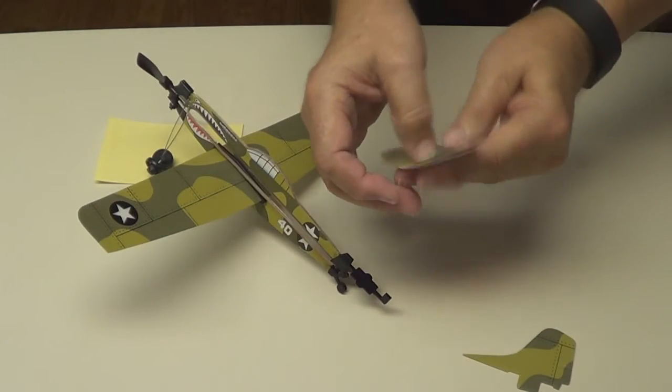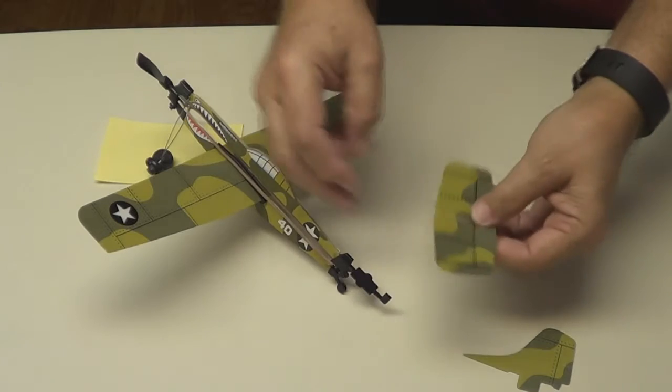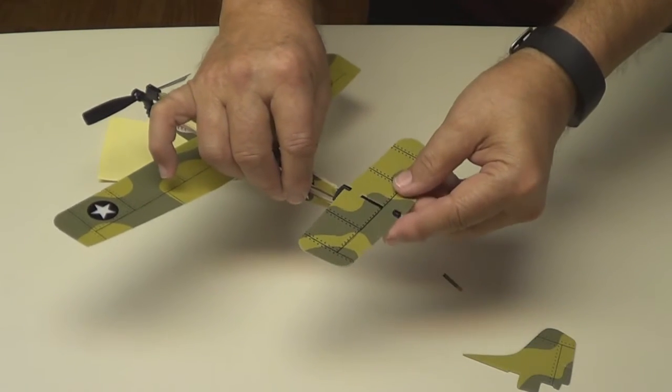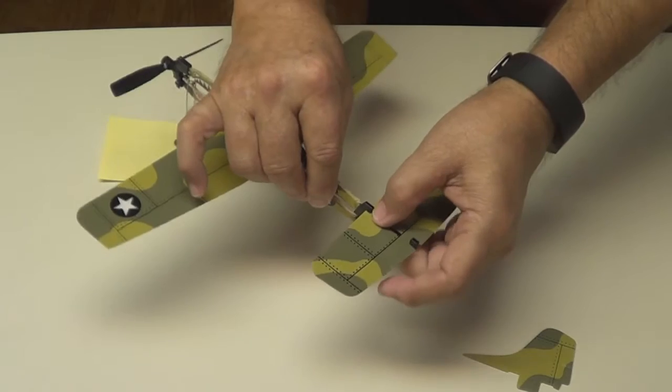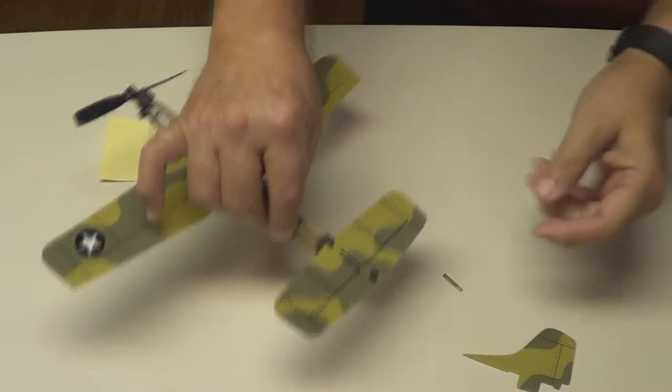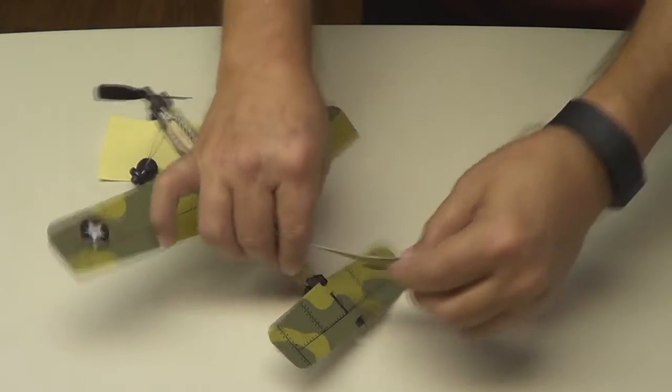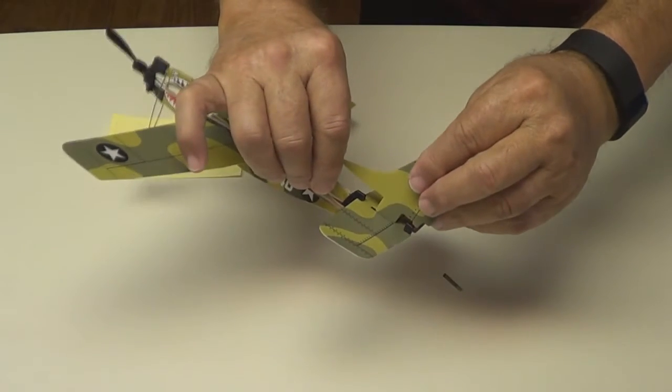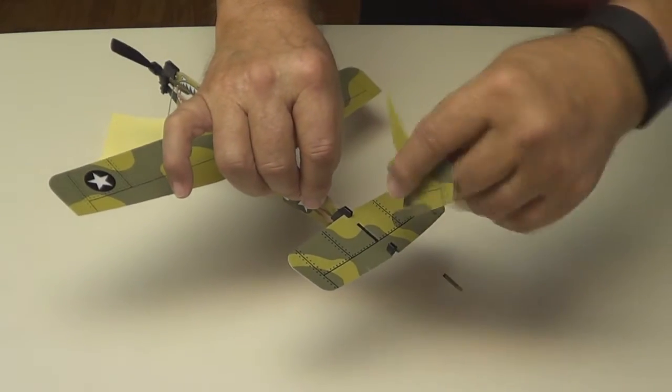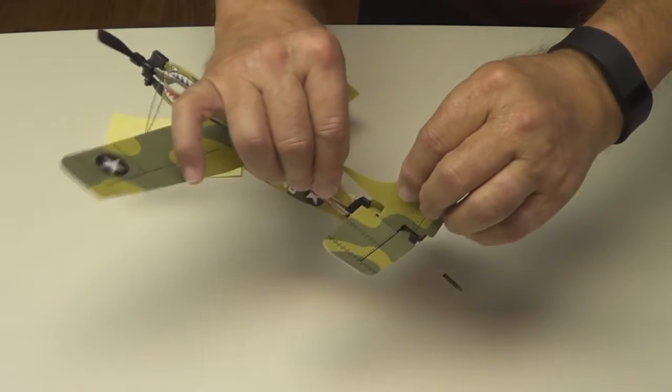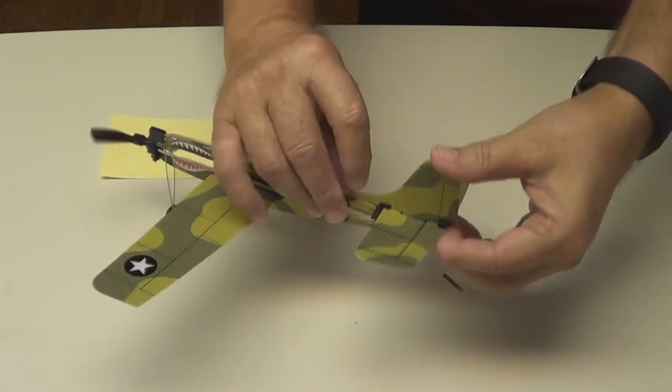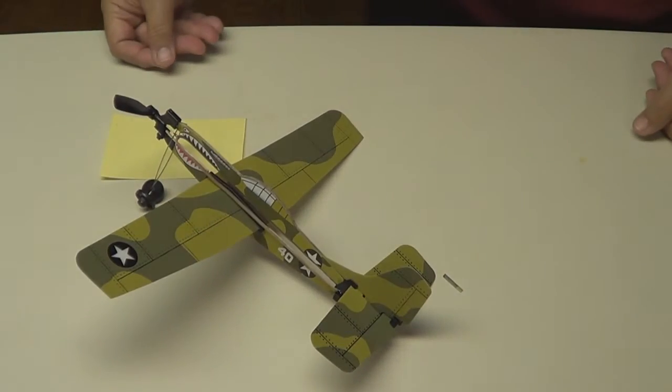There's your elevator. Punch out the slot so the rudder slips through it. It slips on right there. Now the rudder fits in that little slot. Right there. There's all your wings on.